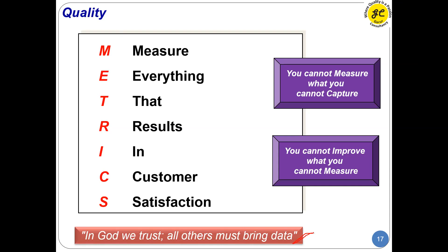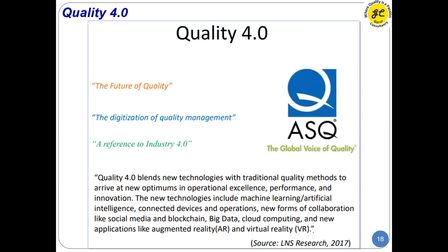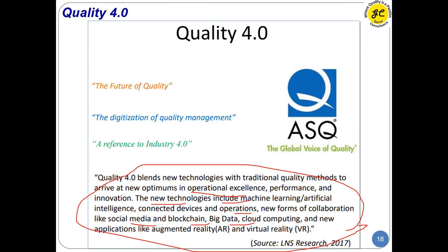As per ASQ, Quality 4.0 is defined as blending new technologies with traditional quality methods to arrive at new optimums in operational excellence and performance innovation. New technologies influencing it include machine learning, artificial intelligence, connected device operations, blockchain, big data, and social media collaboration. Quality 4.0 is not new in concept — it is leveraging these technologies for product design and process improvement. It is not easy, not cheap, and requires significant investment and people well-versed in new technologies.